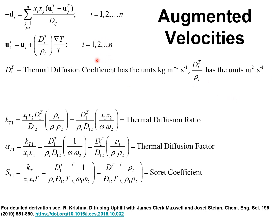The use of augmented velocities follows the treatment in the classic text by Hirschfelder, Curtis, and Bird. To give an example, in CVD processes — where CVD stands for chemical vapor deposition — thermal diffusion causes large heavy gas molecules such as WF6 to behave distinctively.